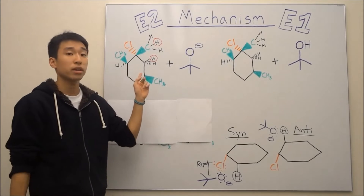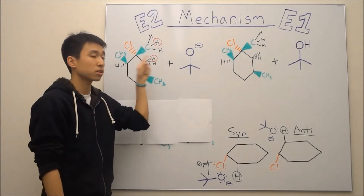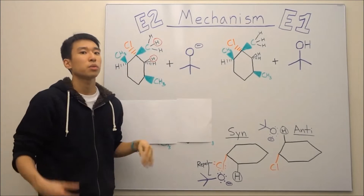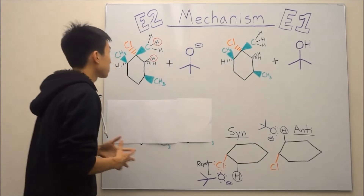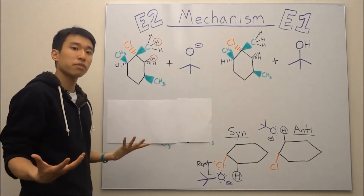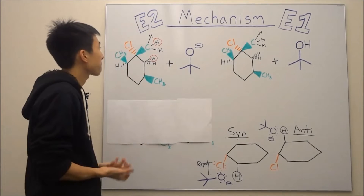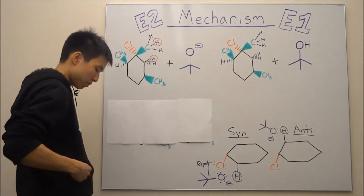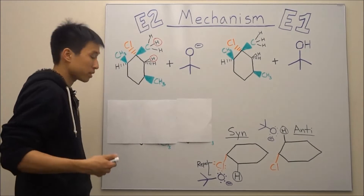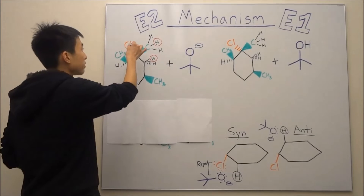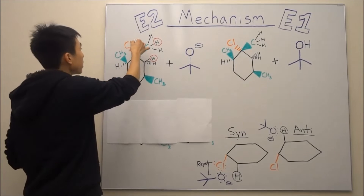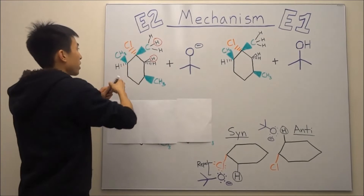Now that you have your anti-beta hydrogens all circled up for E2, we can start doing our mechanism. The most common mistake that people make is that they have the leaving group, chlorine, leave right away.